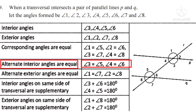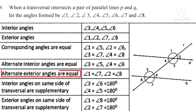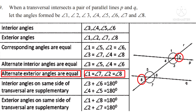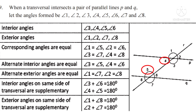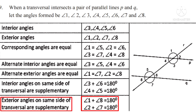Alternate interior angles are also equal: angle 3 equals angle 5, and angle 4 equals angle 6. Alternate exterior angles are also equal: angle 1 equals angle 7, and angle 2 equals angle 8. Interior angles on the same side of the transversal are supplementary: angle 3 plus angle 6 equals 180 degrees, and angle 4 plus angle 5 equals 180 degrees. Exterior angles on the same side of the transversal are supplementary: angle 1 plus angle 8 equals 180 degrees, and angle 2 plus angle 7 equals 180 degrees.